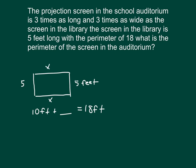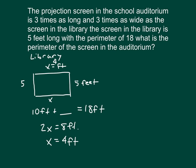Eight feet. So we have 2x equaling eight feet, meaning that the width of the screen within the library is x equals 4 feet. So we have a screen that is 5 feet by 4 feet.